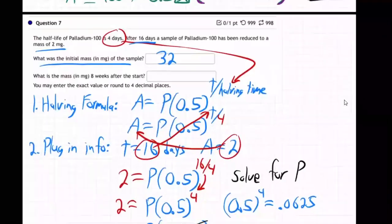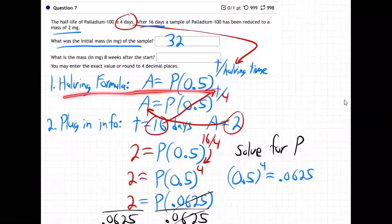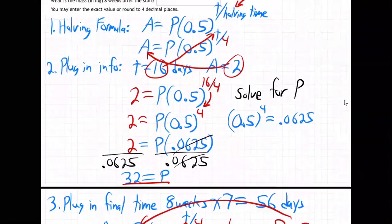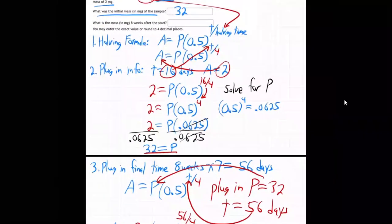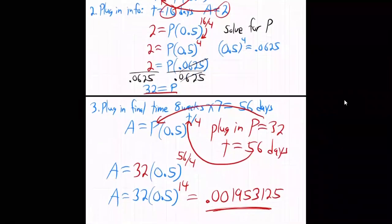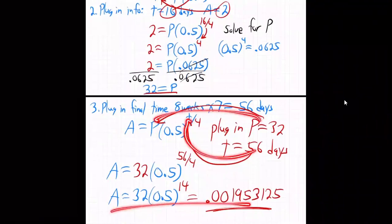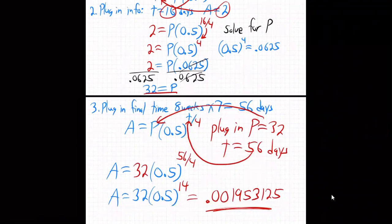So recapping, whenever we get a doubling or halving problem, we grab the formula for halving. This is the halving one with 0.5. Plug in the halving time, then plug in the initial information - 16 days, the amount was 2. I found P is 32, and that's the initial amount. Then answer the final question: plug in the final time, 8 weeks times 7 days is 56 days. That's how much is left after 56 days.